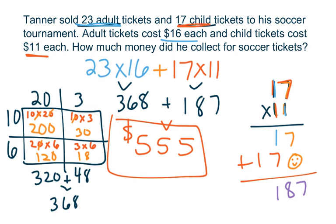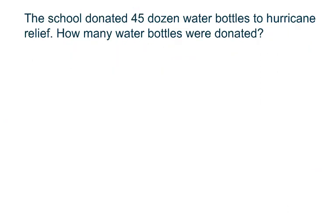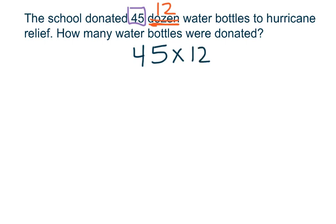Tanner collected $555 from soccer tickets. Let's take a look at one last problem. The school donated 45 dozen water bottles to Hurricane Relief. How many water bottles were donated? You might wonder how to solve this with only one number — look at the word 'dozen.' A dozen equals 12, so our equation is 45 times 12. Go ahead and solve for 45 times 12 to figure out how many water bottles were donated.